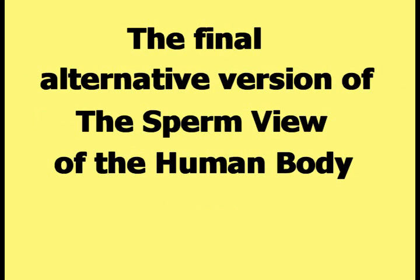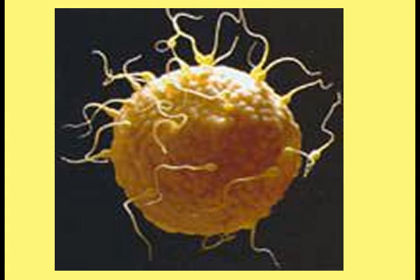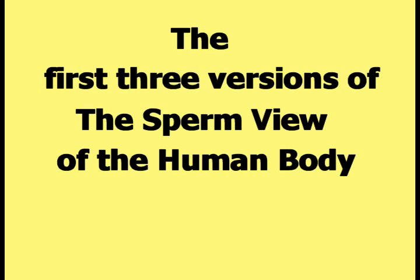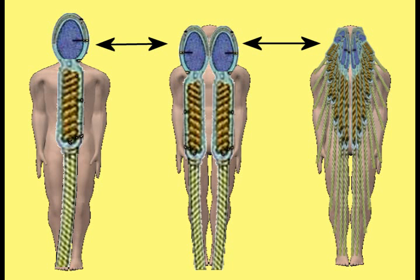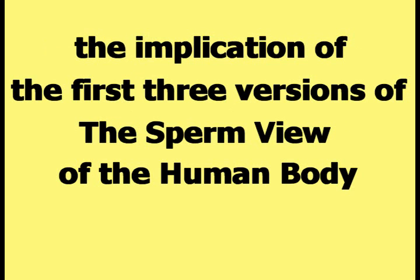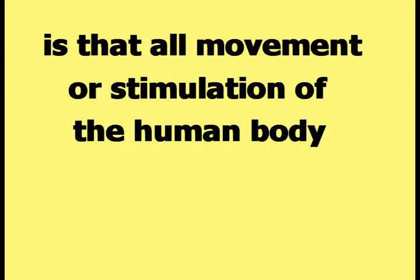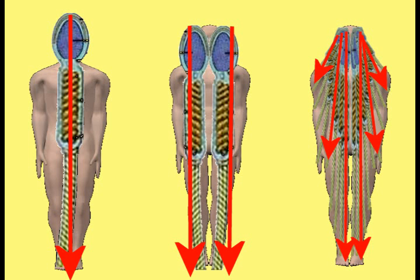The final alternative version is based on a picture of sperms fertilizing an egg, where many sperms attempt to penetrate the egg from many different angles. The first three versions all located the heads of the sperms on the human head, implying that all movement or stimulation begins at the head and travels down to the rest of the body.